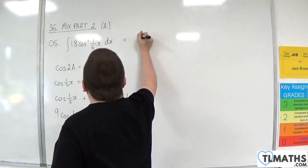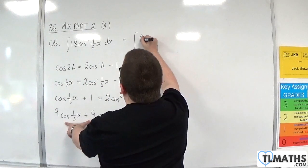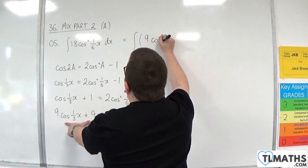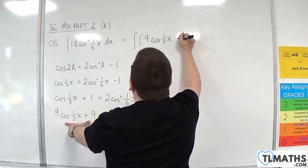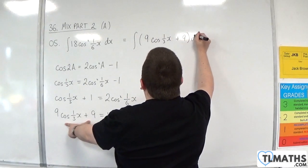So, I can replace this with the integral of 9 cosine of one-third x plus 9 dx.